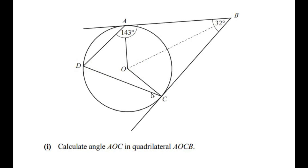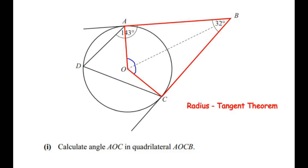Calculate the angle AOC in the quadrilateral AOCB. So here we have to find angle AOC, and since it is mentioned that AOCB is a quadrilateral, we highlight this. Now we have to make use of a circle theorem here, which is the radius-tangent theorem. According to this theorem, the radius of a given circle always makes a 90-degree angle with the tangent touching it.